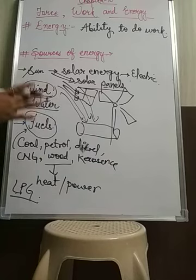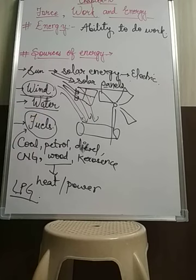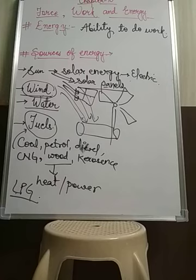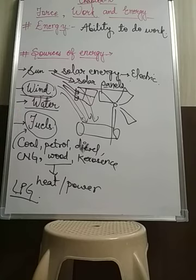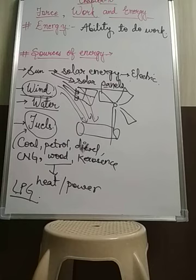One thing is common across all these sources: one form of energy can be converted into another form of energy. In electric bulbs, electrical energy converts into heat energy and light energy. In an electric iron, electrical energy converts into heat energy. In speakers, electrical energy converts into sound energy. In doorbells, electrical energy converts into sound energy. In heaters, electrical energy converts into heat energy. So the forms of energy are inter-convertible — one form of energy can easily be converted into another.